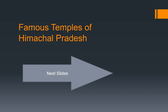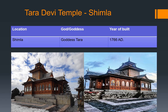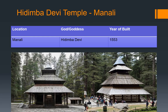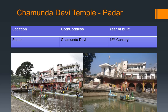Now the famous temples of Himachal Pradesh. First is Tara Devi Temple located in Shimla, dedicated to Goddess Tara, built in 1766 AD. Then is Jakhu Temple located in Shimla, dedicated to Lord Hanuman. Then is the very famous Hidimba Devi Temple located in Manali, dedicated to Hidimba Devi, built in 1553. Then is Chamunda Devi Temple located in Padar, dedicated to Chamunda Devi, built in the 16th century.